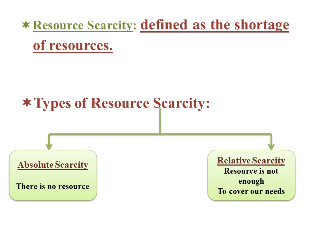Resource scarcity means shortage of resources. We have two types of resource scarcity. The first type is absolute scarcity, which means no resources at all. The second type is relative scarcity, which means that resources are not enough to cover our needs.